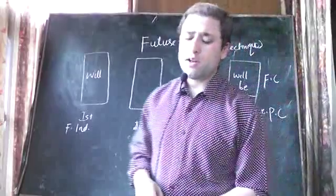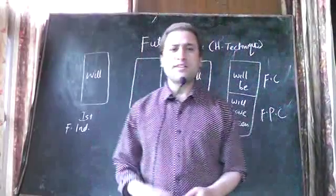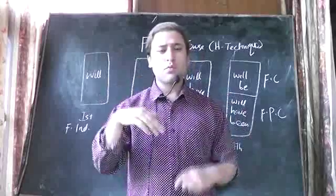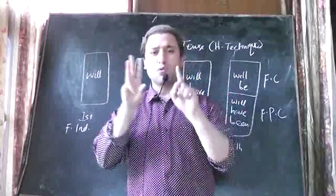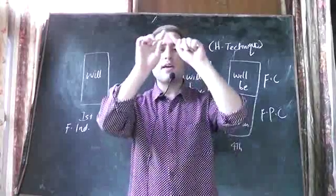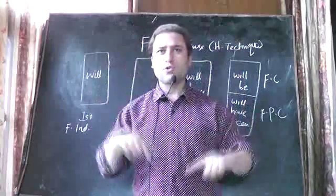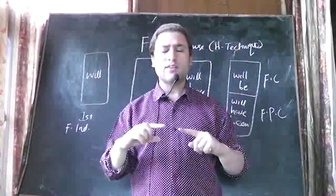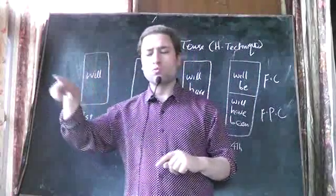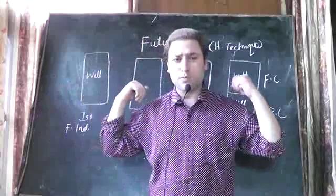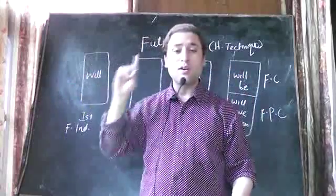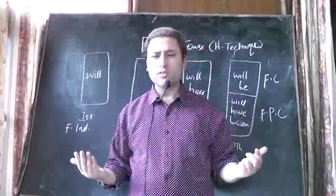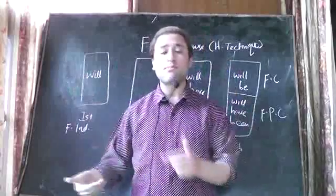We don't have to remember complex rules here. Directly, according to my technique: with the first box we use the first form of the verb, with the second box we use the second form, with the third box we use the third form, and with the fourth box we use the fourth form. Make the boxes in your brain — close your eyes, take a blank slate, draw four boxes and fill them with helping verbs. Remember: tense is always the agreement between subject and verb.